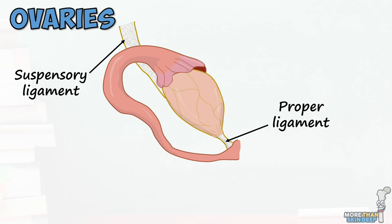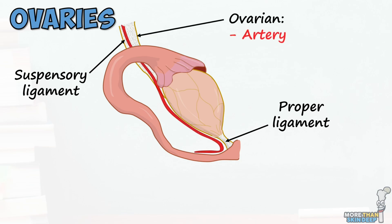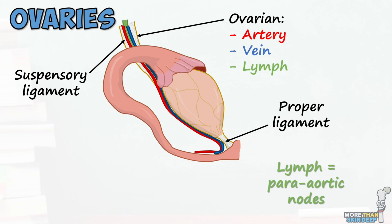This includes the ovarian artery, which comes from the abdominal aorta; the ovarian vein, which is formed from the pampiniform plexus and drains into the inferior vena cava on the right and the renal vein on the left; the ovarian lymph vessels, which mostly drain into the para-aortic nodes; and the ovarian nervous plexus, which contains both sympathetic and parasympathetic nerves.